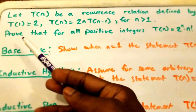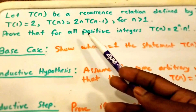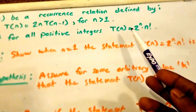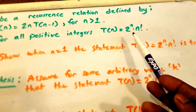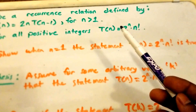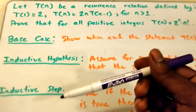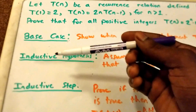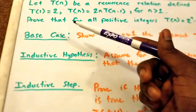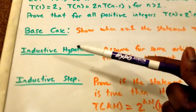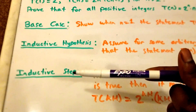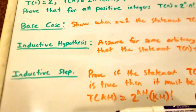We want to prove that for all positive integers, T of n is equal to 2 to the power of n times n factorial. When we do a proof by induction, we usually have our base case, an inductive hypothesis, an inductive step, and sometimes a conclusion afterwards.